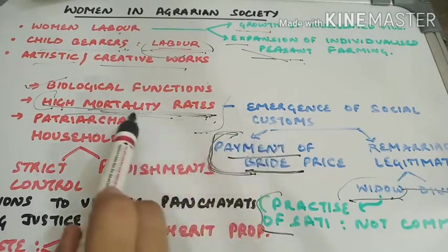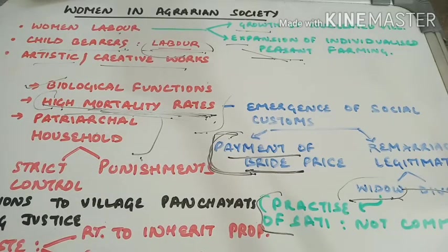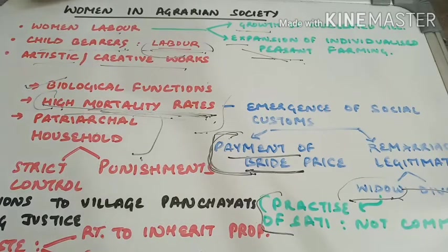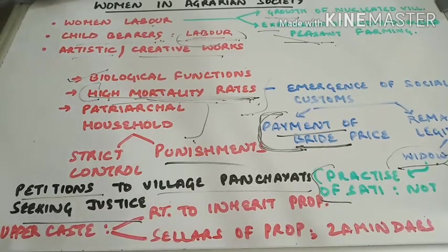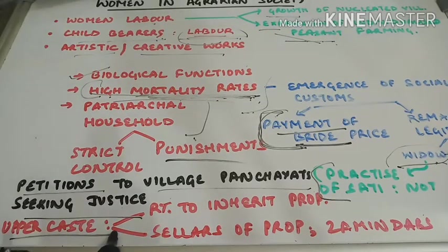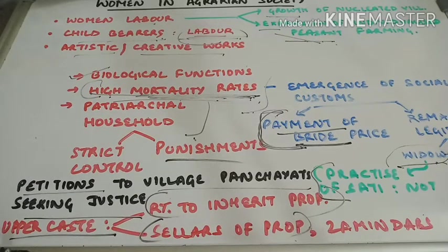One thing to remember is that the practice of sati was more common among urban and elite women — since we are talking about women in agrarian society, it was not that common here. Women were an important component of the agrarian society, but there is no denying that women lived in a patriarchal household. Ultimately, it was the male who was the head of the family with strict control over wives and children. There are documents from Rajasthan, Gujarat, and Maharashtra showing women sent petitions to the village Panchayat seeking justice, but in the majority — almost 99% — of cases, it was all in vain. In the case of upper caste females, they had the right to inherit property, sometimes sell property, and there were even women zamindas.